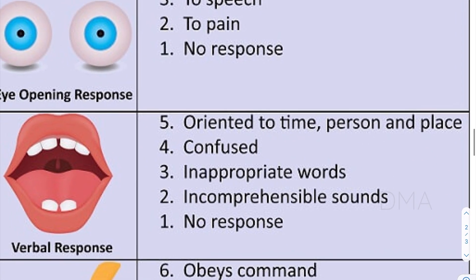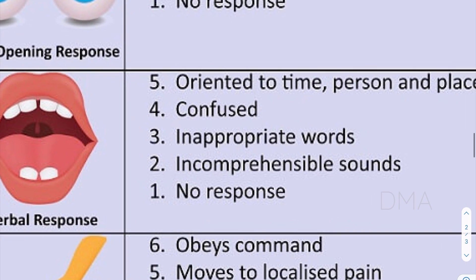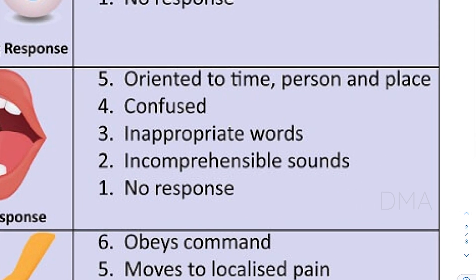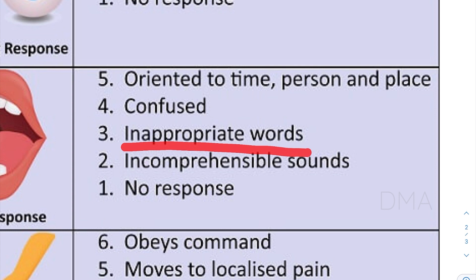Now let's look at the verbal response. If the patient has proper orientation to time, person, and place and speaks clearly, we give him a score of five. If the patient is talking in a confused manner, we give him a score of four. If he is talking in inappropriate words, we give him a score of three. If he is making only incomprehensible sounds, we give him a score of two. If there is no verbal response at all, we give him a score of one.